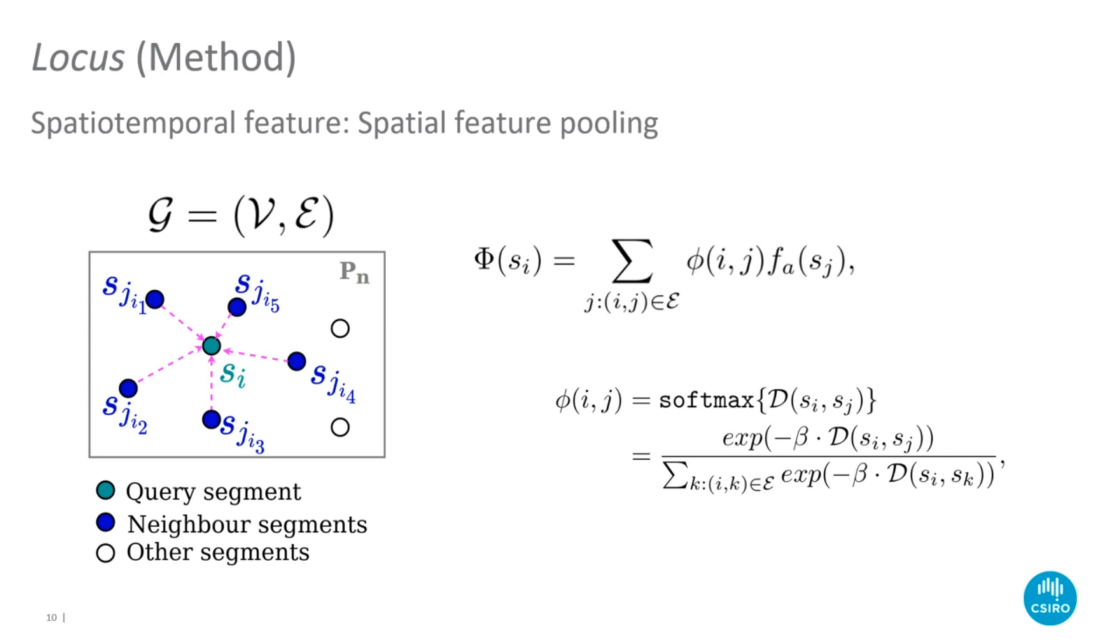Given the graph encoding topological relationships, for each segment SI, a spatial feature, noted as phi, is computed by pooling features along the edges of this graph. This essentially computes a weighted sum of the structural appearance features of the nearest segments to SI. The weights in this pooling are calculated using softmax of the MTD to ensure that closer segments have a higher weight.